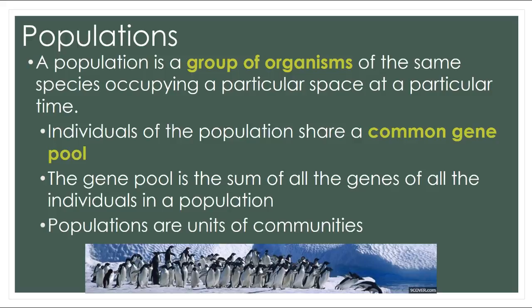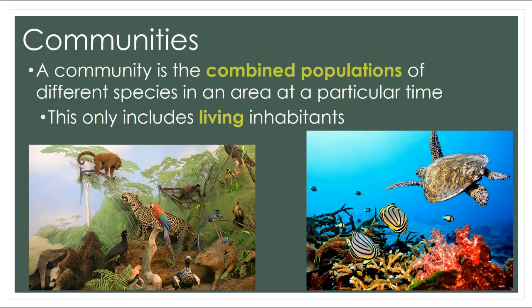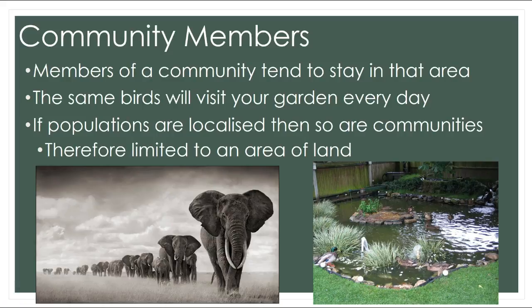Populations make up a community, which is a combined group of different species populations in an area at a particular time. On a coral reef, for example, you've got communities of different populations — like sea turtles and fish — living together. Members of a community tend to stay in the same area; the same birds will tend to visit your garden each day. These populations are localized, and so are the communities.